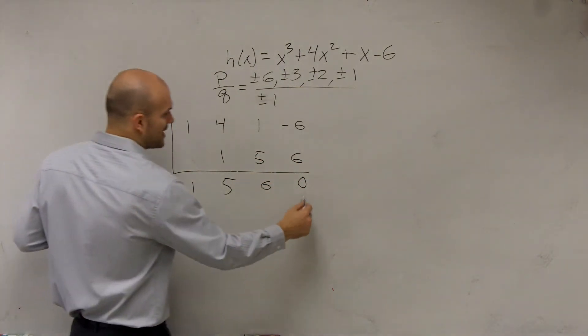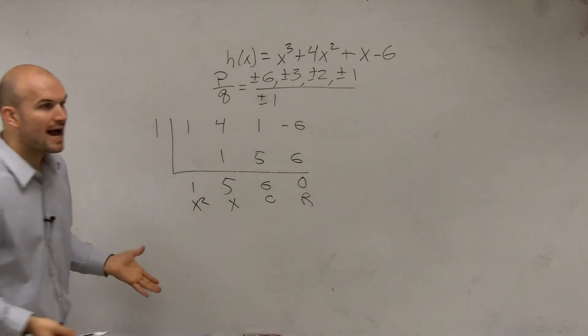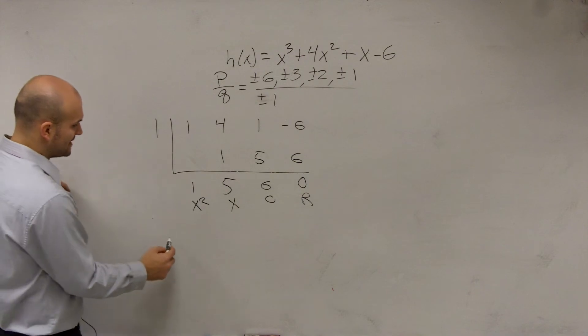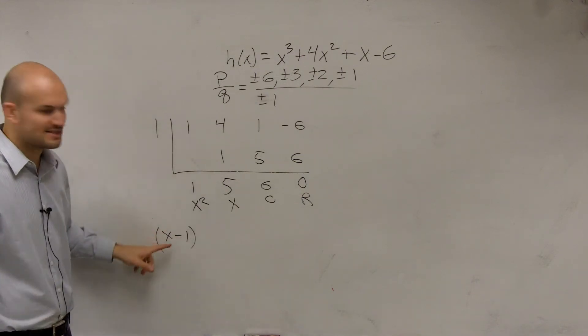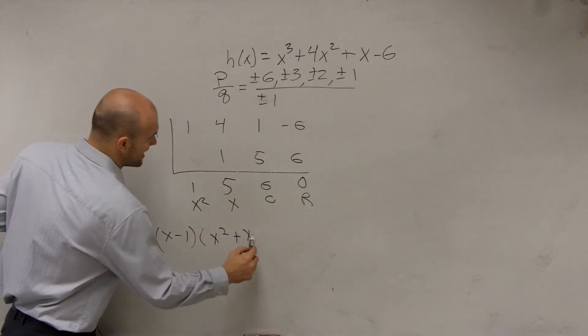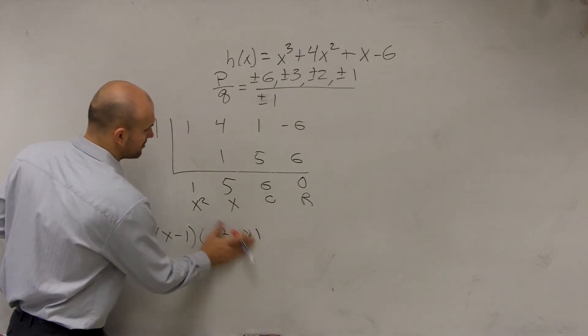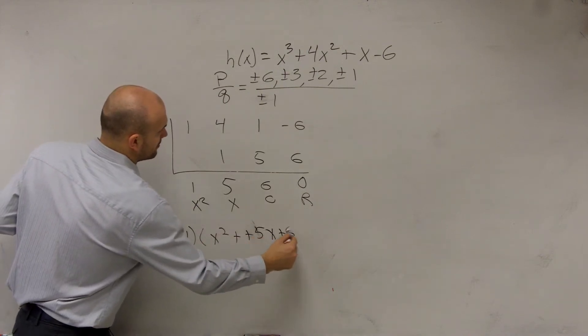Good job. So therefore, we have remainder, constant, linear, quadratic. So now, I could say that that means x minus 1 is a factor, right? Because if 1 is a zero, that means x minus 1 is a factor. Times x squared plus 5x plus 6.